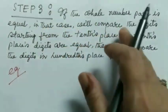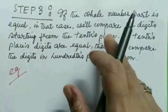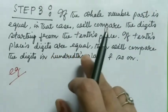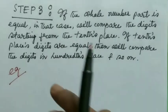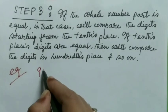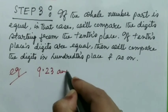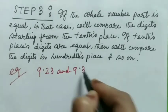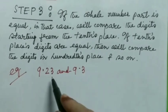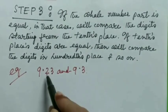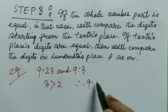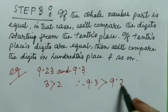Step number three: if the whole number part is equal, in that case we will compare the digits starting from the 10th place. If 10th place's digits are equal, then we will compare the digits in 100th place and so on. For example, if I take 9.23 and 9.3, here whole number parts are equal, both are 9. So we will compare next one, that means 10th place. So in 10th place this one is 3, this one is 2. As 3 is greater than 2, therefore 9.3 is greater than 9.23.